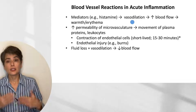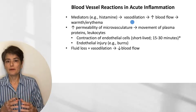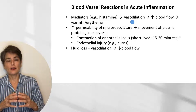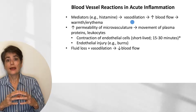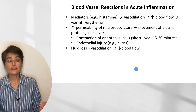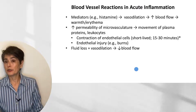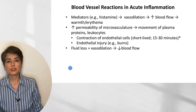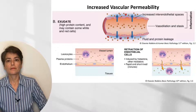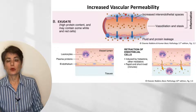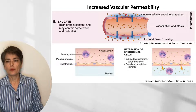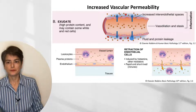Vasodilation increases the area of the vessel, which slows flow. We're also losing fluid through increased permeability, causing decreased blood flow — important for getting neutrophils where they need to go. When we get this increased vascular permeability, we get what's called an exudate, with high protein content and a few scattered white and red cells. In inflammation we have increased interendothelial spaces, and you can see a neutrophil moving out of the vessel.